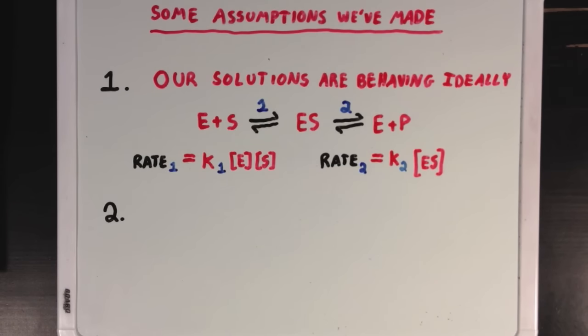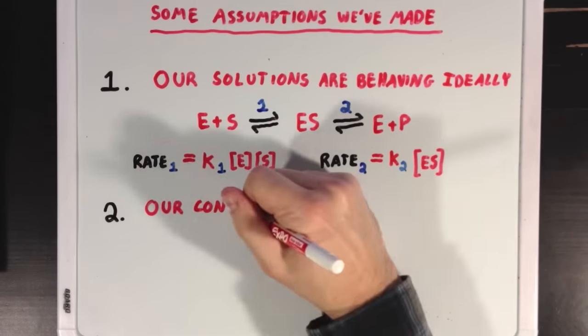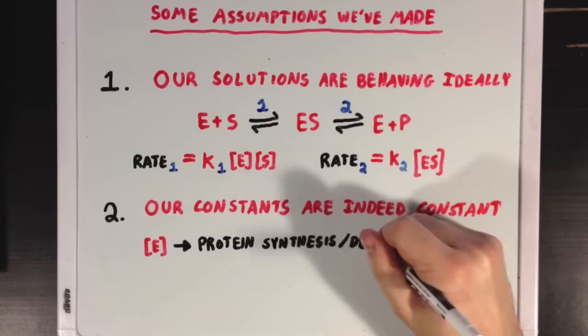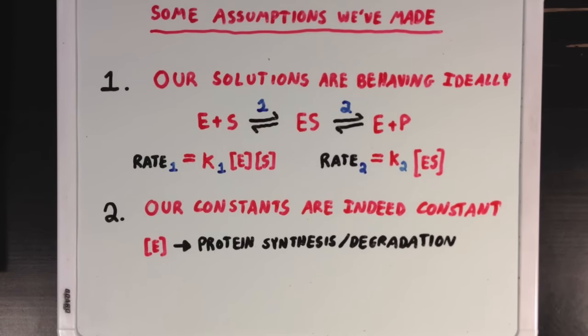Our second assumption is that our two big constants stay constant. We're assuming that our enzyme concentration isn't changing from things like protein synthesis and degradation. And we're also assuming that our rate constant K isn't changing from environmental factors like changes in temperature.